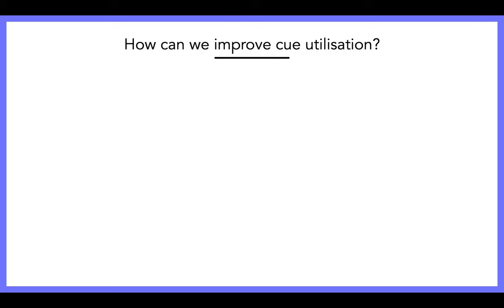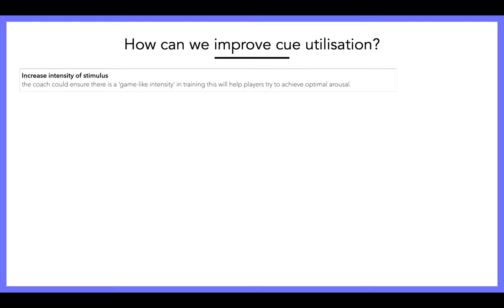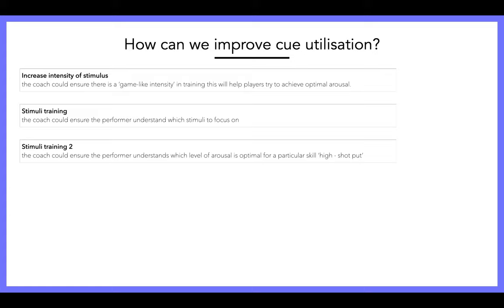Cue utilization is a skill that can be learned, and coaches often work on it with their athletes. First, increasing the intensity of the stimulus: the coach could ensure there is a game-like intensity in training, helping players achieve their optimal arousal and prevent under-arousal. If you're constantly training at game-like intensity, you become used to getting yourself to that optimal arousal regularly. Stimuli training: the coach could ensure the performer understands which stimuli to focus on, and also which level of arousal is optimal for a particular skill.